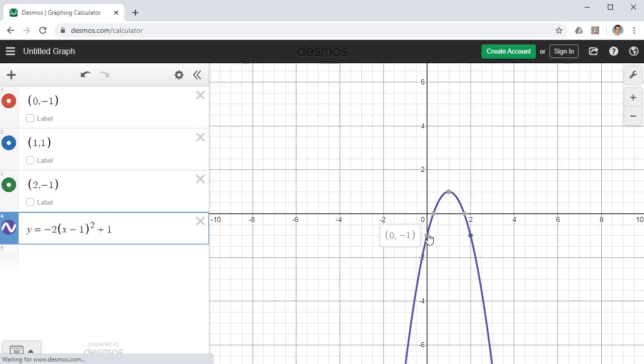So I've completed this question. I've been able to make a parabola that passes through those three points. And the answer is this over here: y equals negative two bracket x minus one close bracket squared plus one.